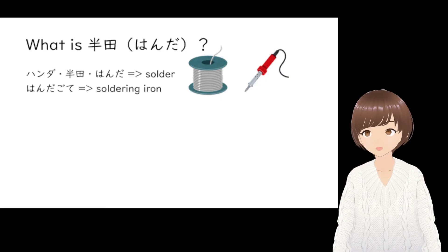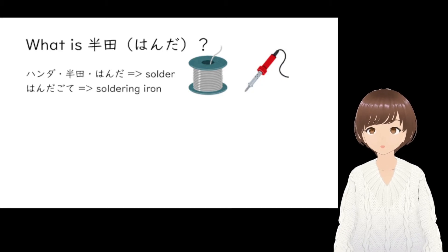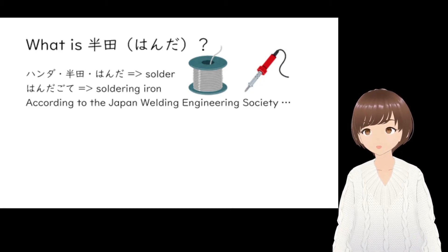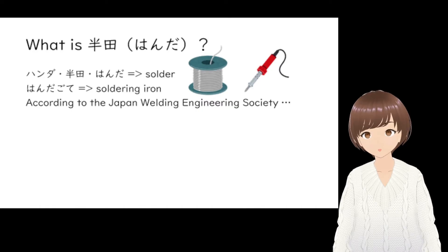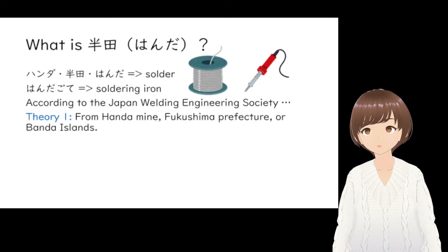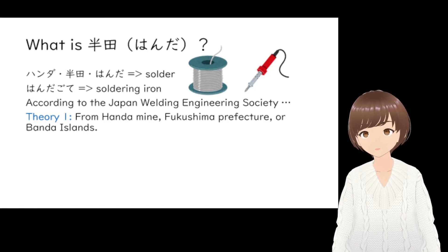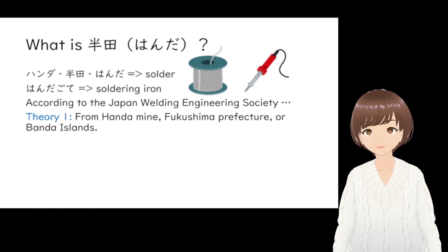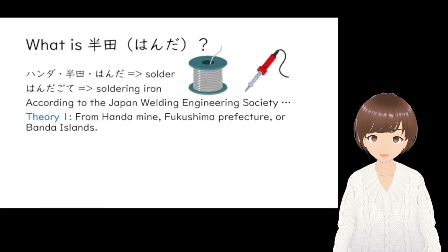So where does this word come from? It's obviously not an English word. According to the Japan Welding Engineering Society website, there are three theories about the origin of this word. Theory number one is that the name came from either HANDA mine in Fukushima Prefecture or from Banda Island. However, both places don't produce tin, which is an ingredient for solder, so it's very unlikely to be the origin.